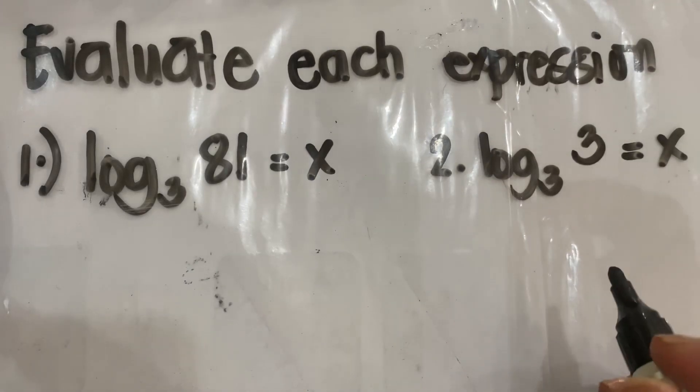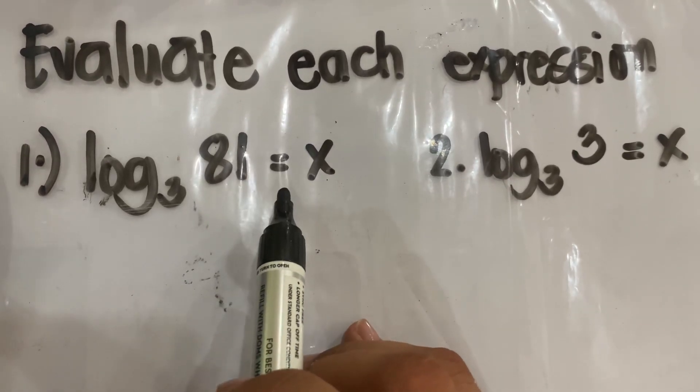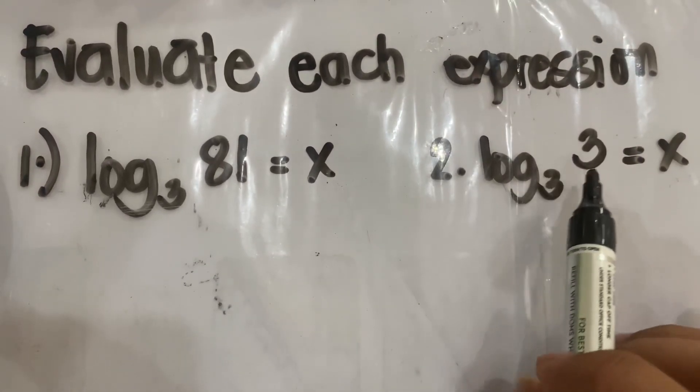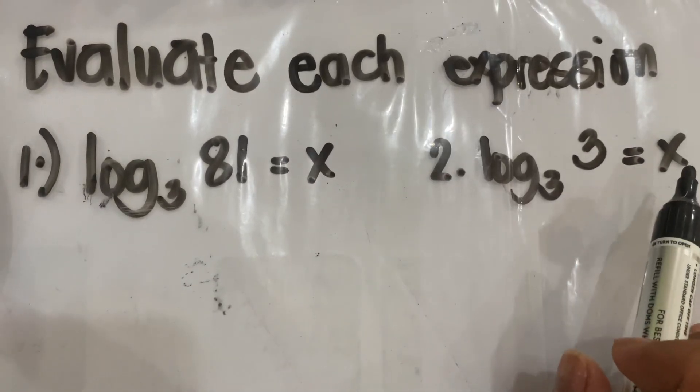So we have here, evaluate each expression. Number 1, logarithm of 81 to the base 3 equals x. Number 2 is logarithm of 3 to the base 3 is equal to x.